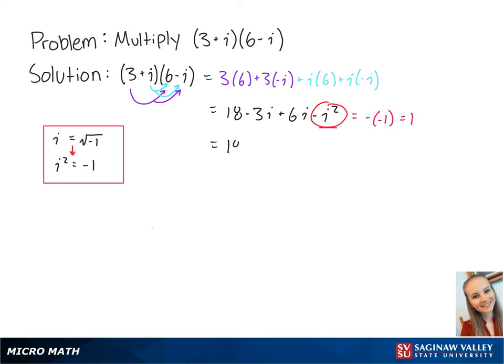So our expression is equal to 18 minus 3i plus 6i plus 1. If we combine like terms, we get 19 plus 3i. And this is the final answer.